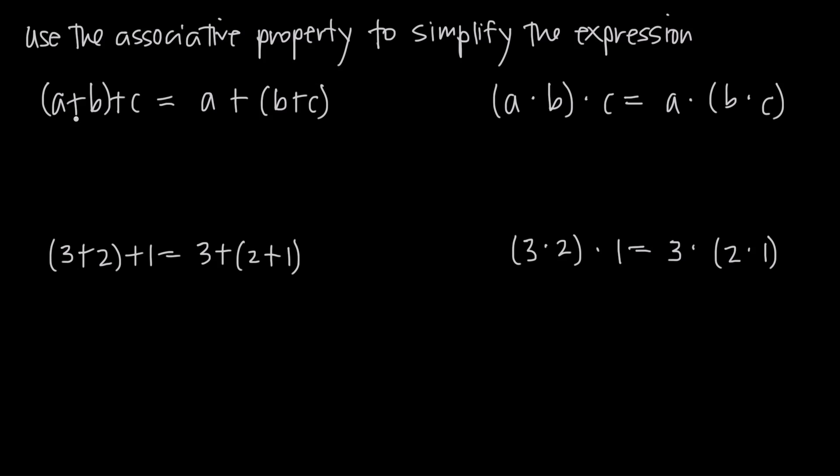So for example here, essentially we have a plus b plus c. The associative property tells us that if we group together a plus b and then add c to the result of the group, we'll get the same answer as grouping together b plus c and then adding a to the result of this b plus c group.